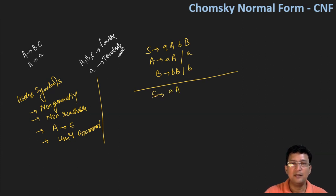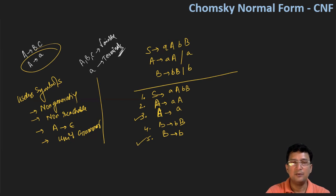S produces small a, capital A, small b, capital B; then A produces small a, capital A; then A produces small a; and then B produces small b, capital B; and then B produces small b. So let's take numbering to identify which productions are already in CNF and which are not. You can see that three and five are in CNF already, they are of this form. And the remaining one, two and four are not in the CNF. So we will try to convert one, two and four to CNF form.